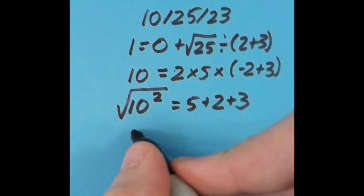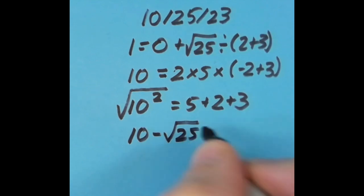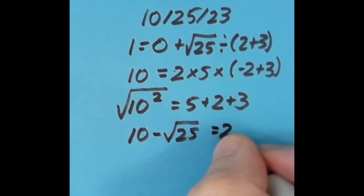With the equal sign over a spot more to the right, I said let's do 10 minus the square root of 25, which is 5. So 10 minus 5 is 5, and so is 2 plus 3.